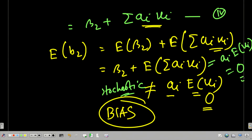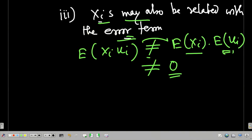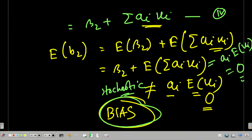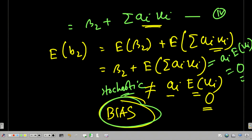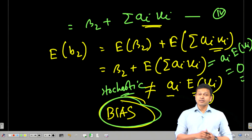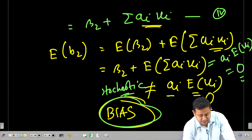The moment xi is correlated with the error term, you actually have a bias term. And the moment you have a bias term, your estimator is no longer going to be a BLUE estimator — it is not going to be the best anymore. That is a problem, and we need to take care of that. Whenever we deal with stochastic regressors, we make an additional assumption beyond the other regression assumptions.